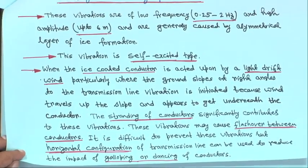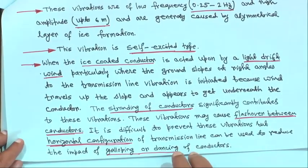This vibration may cause flash over between conductors if they are in vertical configuration. It is difficult to prevent this vibration, but horizontal configuration of transmission line can be used to reduce the impact of galloping or dancing of conductor. In hilly areas, horizontal configuration of conductors is preferable over vertical spacing. With this, the sag and tension chapter is complete. Go through all the derivations, particularly for towers at different heights, ice formation, and wind pressure. Thank you, we will be back again.